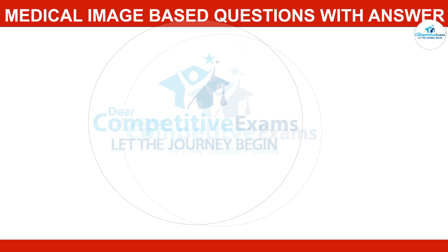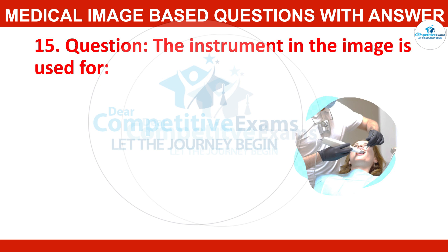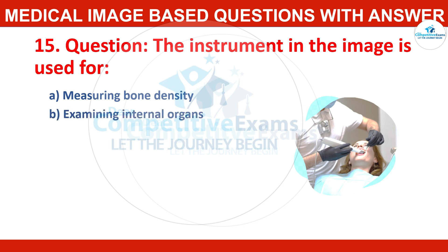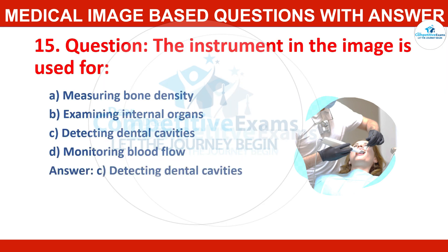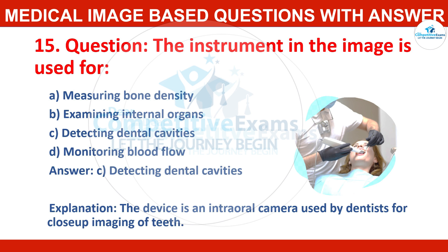Question number fifteen: the instrument in the image is used for — options: measuring bone density, examining internal organs, detecting dental cavities, or monitoring blood flow? Correct answer: the device is an intraoral camera used by dentists for close-up imaging of teeth.